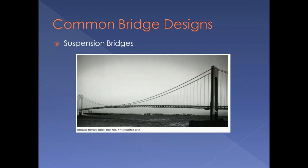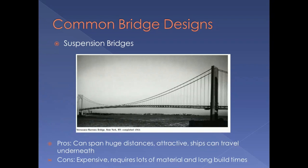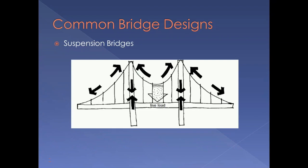Next, we'll look at suspension bridges. This is the Verrazano Narrows Bridge in New York City, New York. Suspension bridges can span huge distances. They're also thought to be attractive, and have the added versatility that ships can travel underneath them. However, suspension bridges are the most expensive type of bridge to build, as they require lots of material and long build times. Here's how the forces are distributed on a suspension bridge.